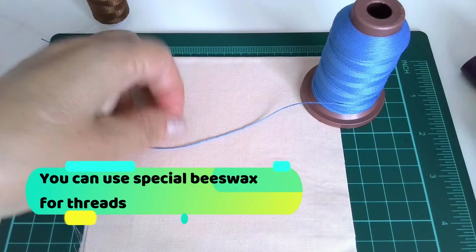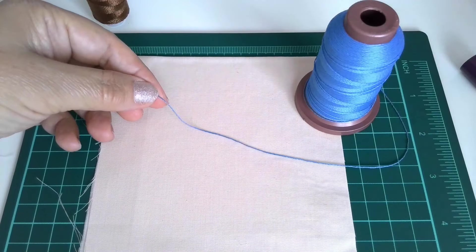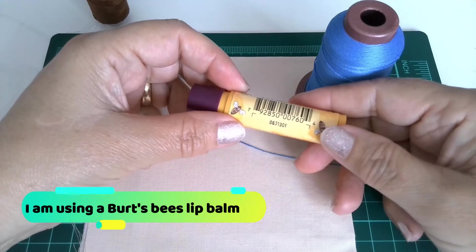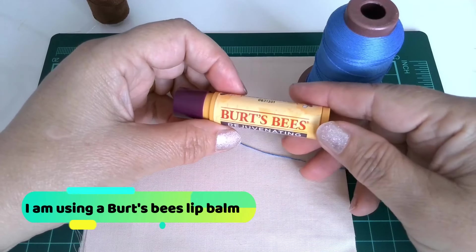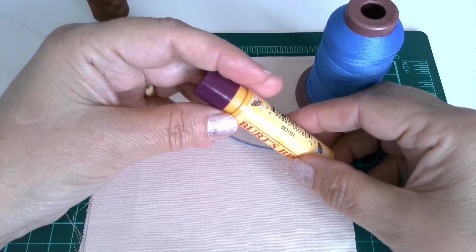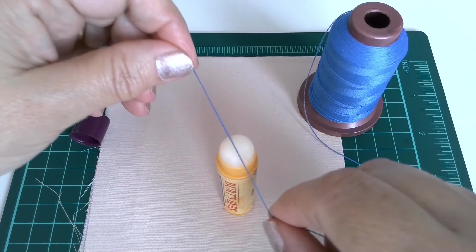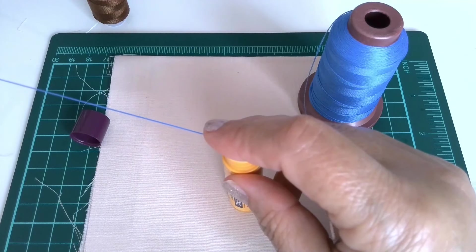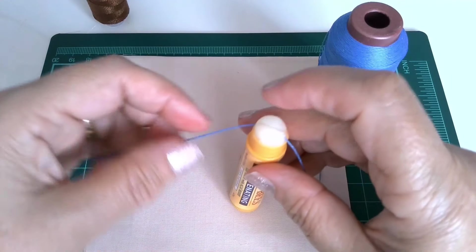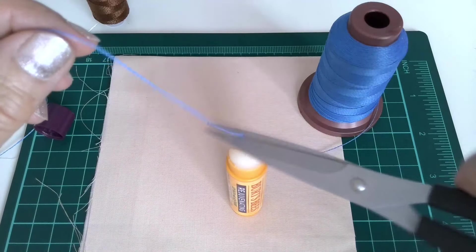I have to condition the thread so it doesn't tangle. For this we can use pearl cotton thread with lip balm. And just put thread like that and cut.